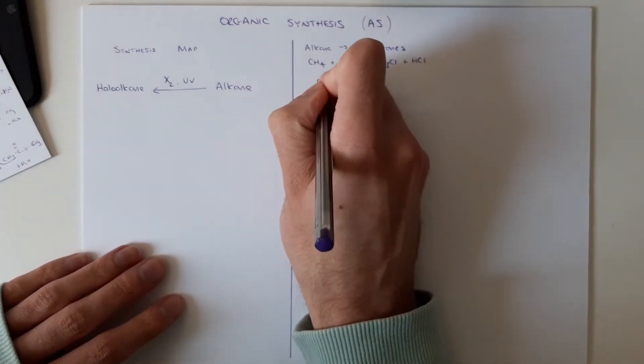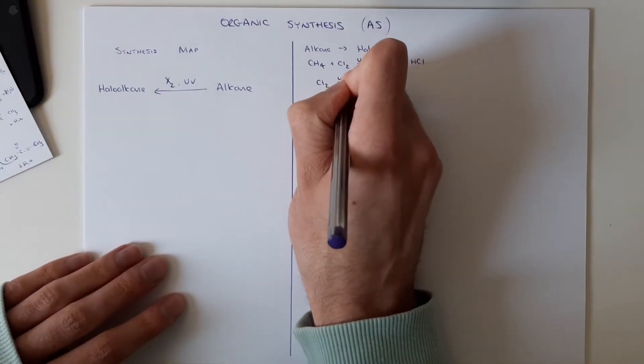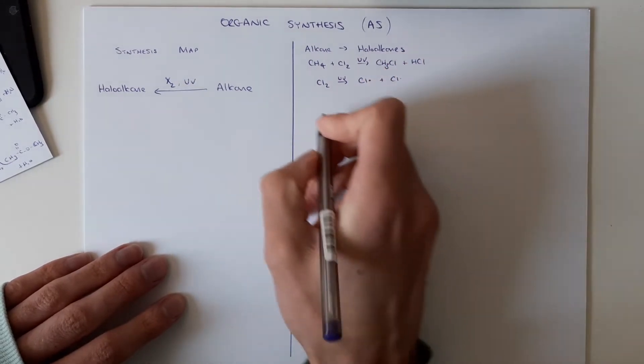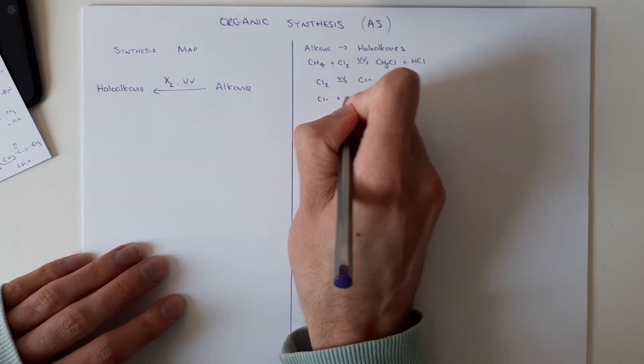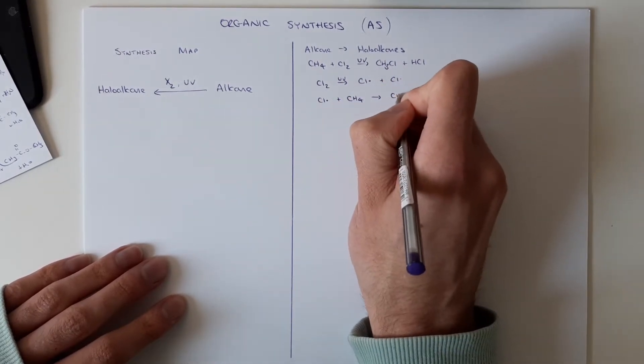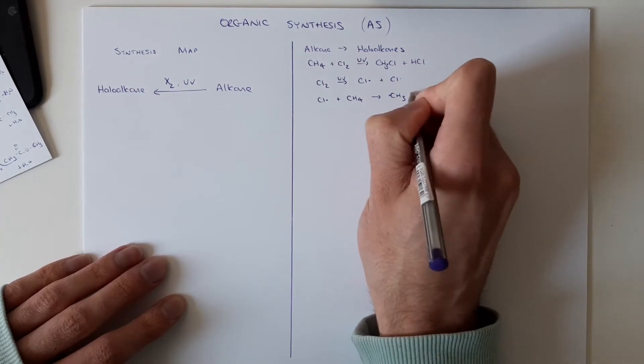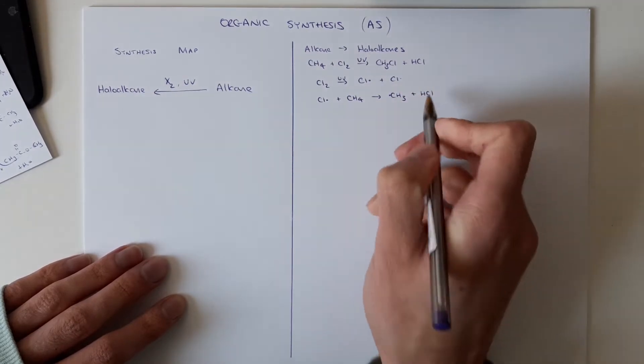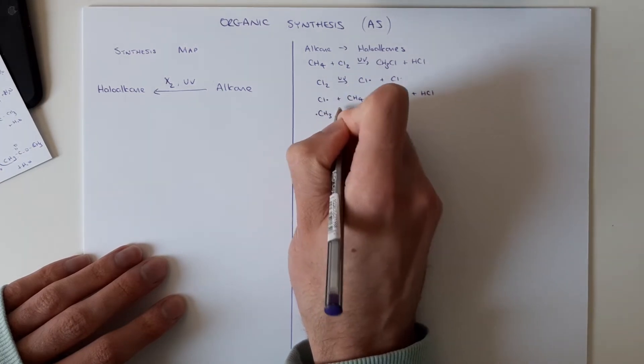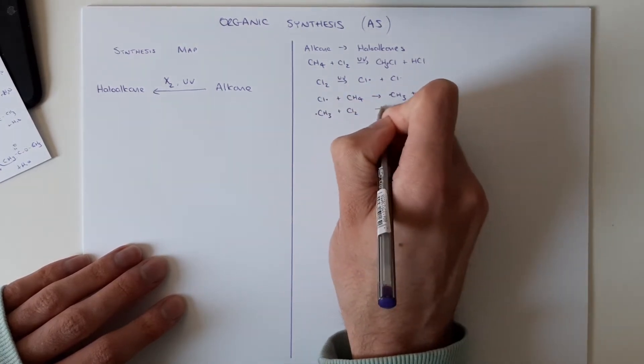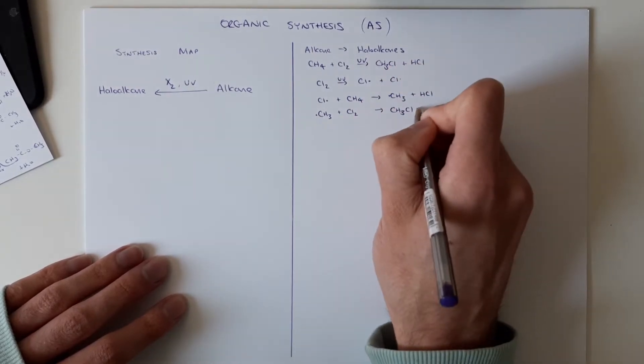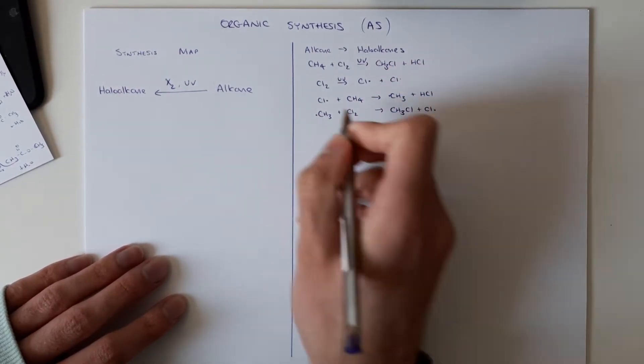So first up we've got our initiation step where in the presence of UV light Cl2 forms the chlorine radicals. Then we've got the first of the propagation steps where we create a methyl radical and HCl, one of our products. That methyl radical then reacts with Cl2 to form CH3Cl, our other product and the catalyst reforms.